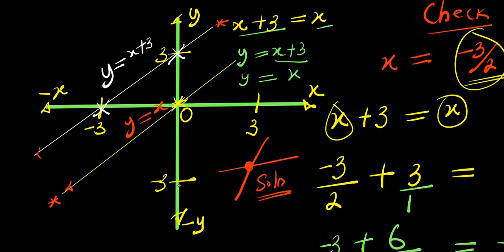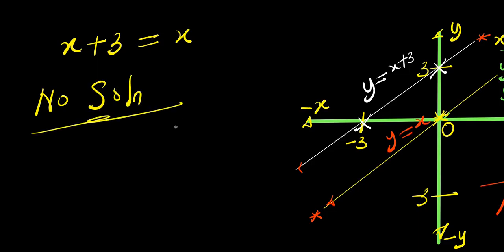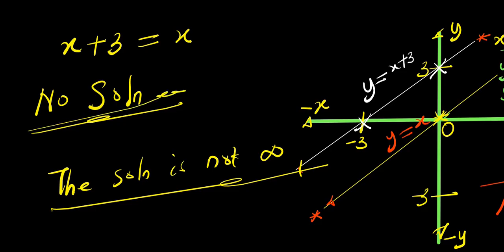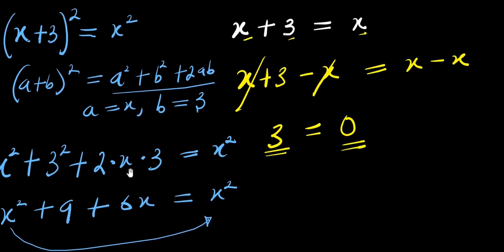So that is it. We can say that for this particular equation, x plus 3 equals x, we can say there is no solution. Some people say the solution is infinity, but infinity is not a number, so the solution can never be infinity. The solution is no solution. I believe you enjoyed every step — don't forget to subscribe and share this video. Thank you and goodbye.